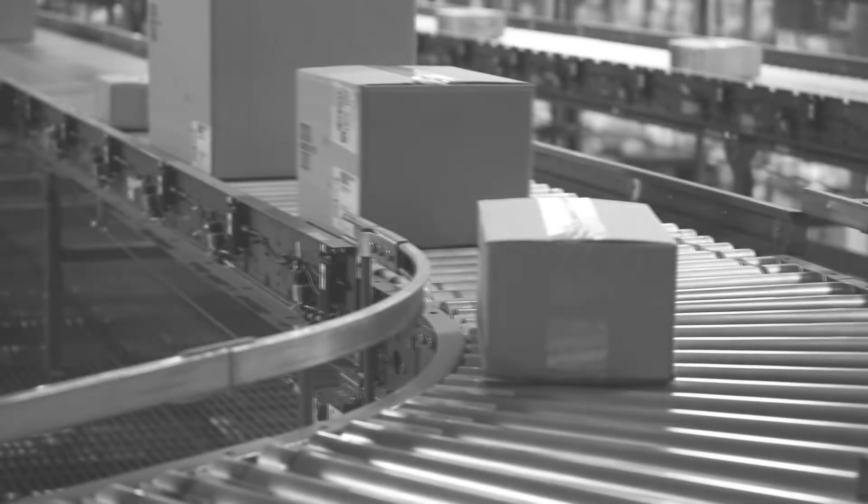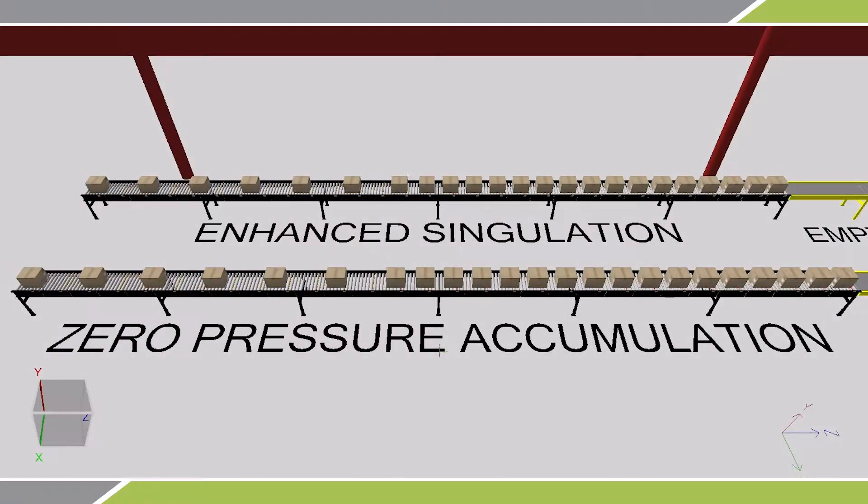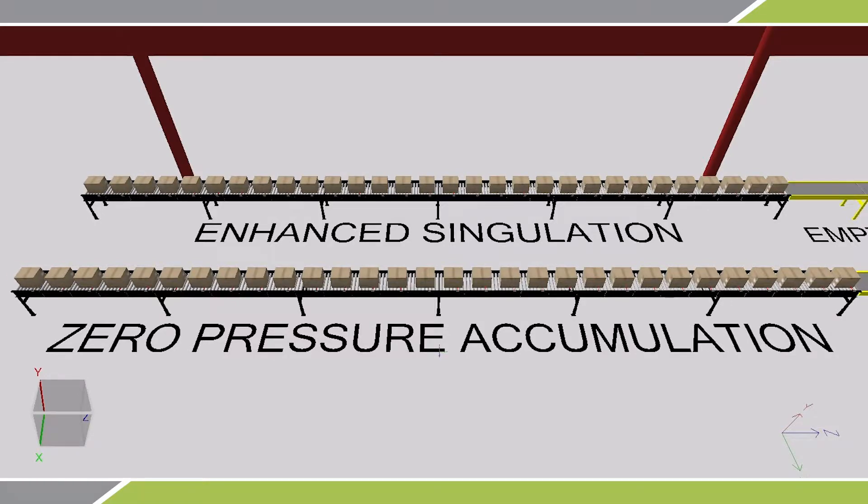When it comes to MDR, there are two common methods of control: enhanced singulation and zero pressure accumulation. This video presents each method side-by-side as a comparison to discover which best suits your operation. Both enhanced singulation and ZPA controlled conveyors load up in a similar fashion at the same rate.